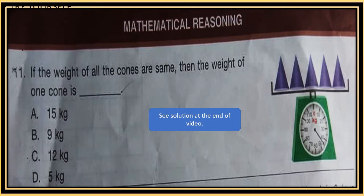Question 11: If the weight of all the cones are same, then the weight of one cone is what? Now see the figure. Five cones are given and the weight of five cones is given in the weighing machine. It's between 40 and 50. So what will be the weight of one cone? See solution at the end of video.